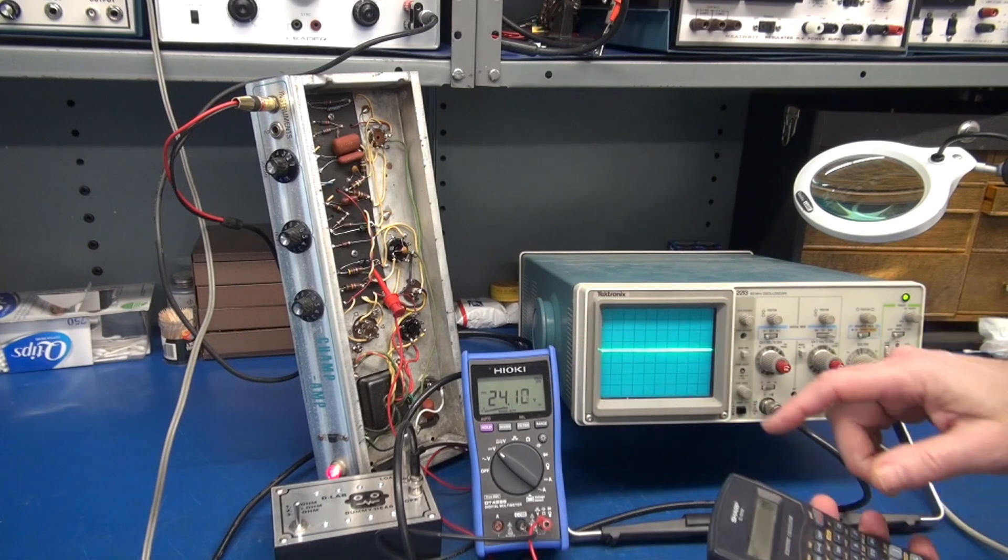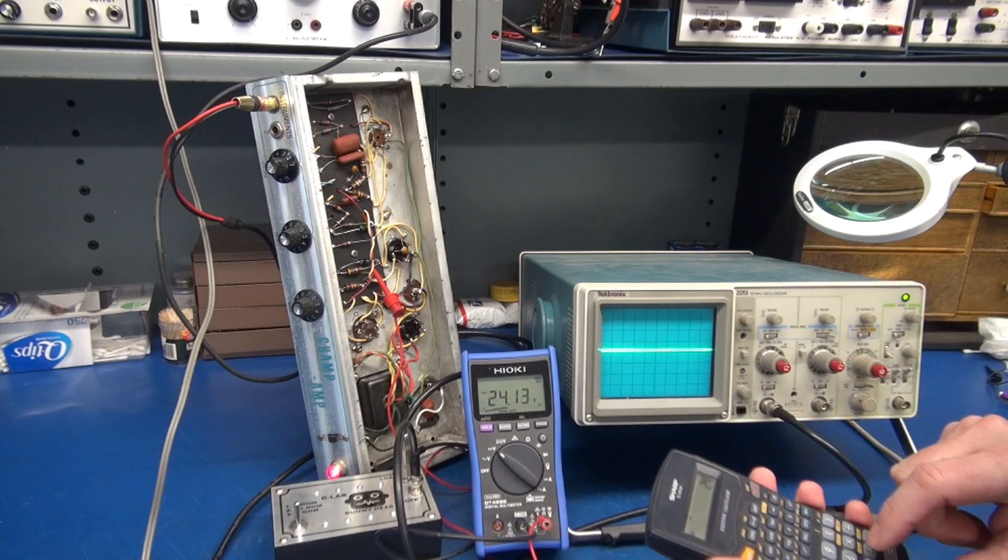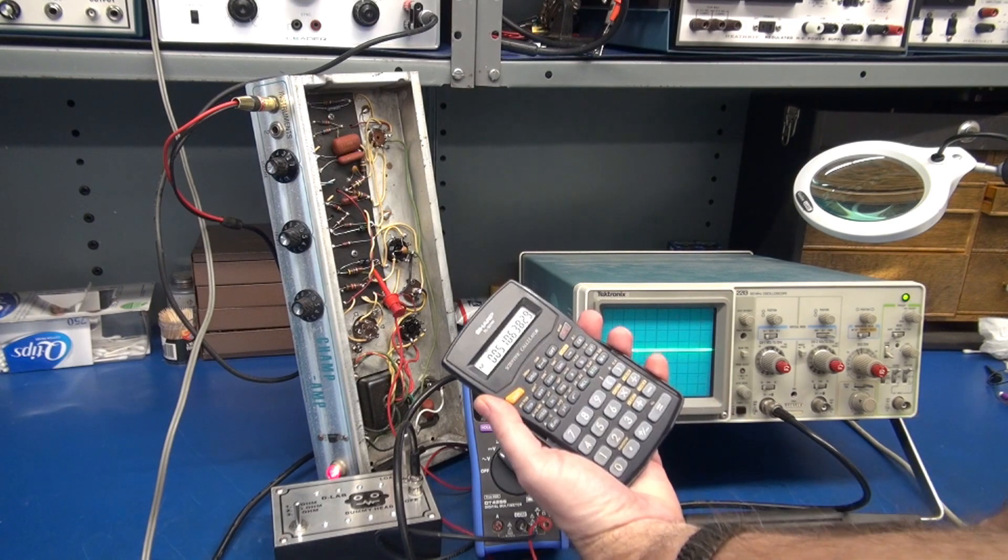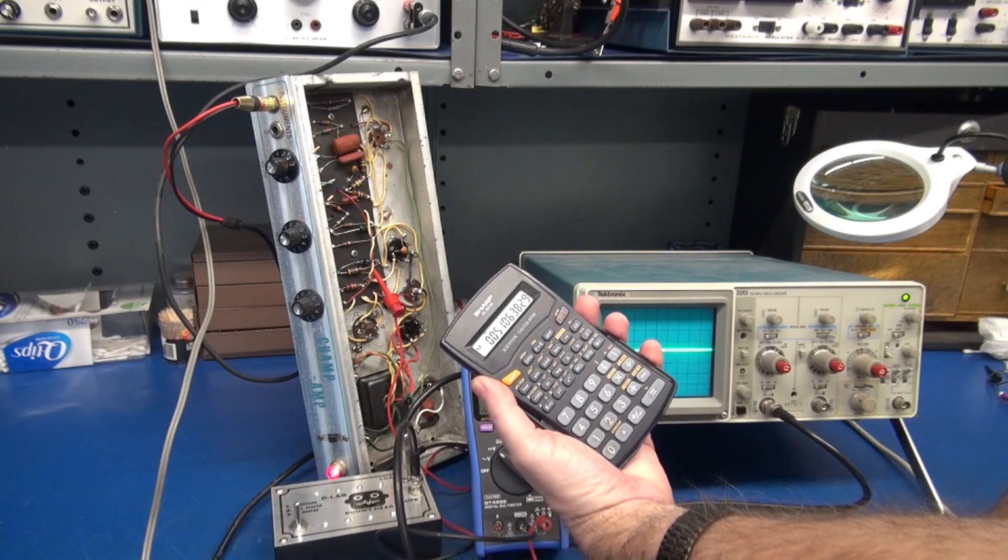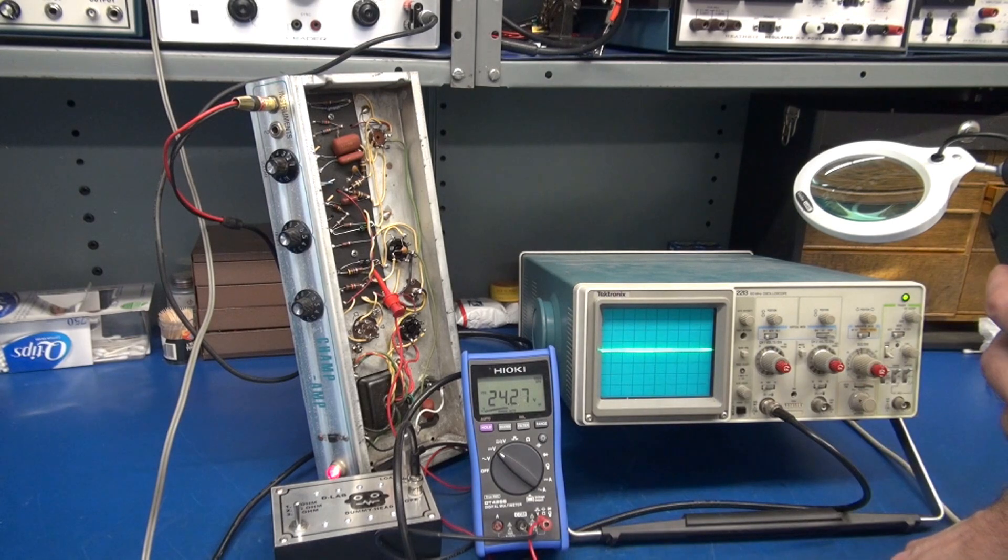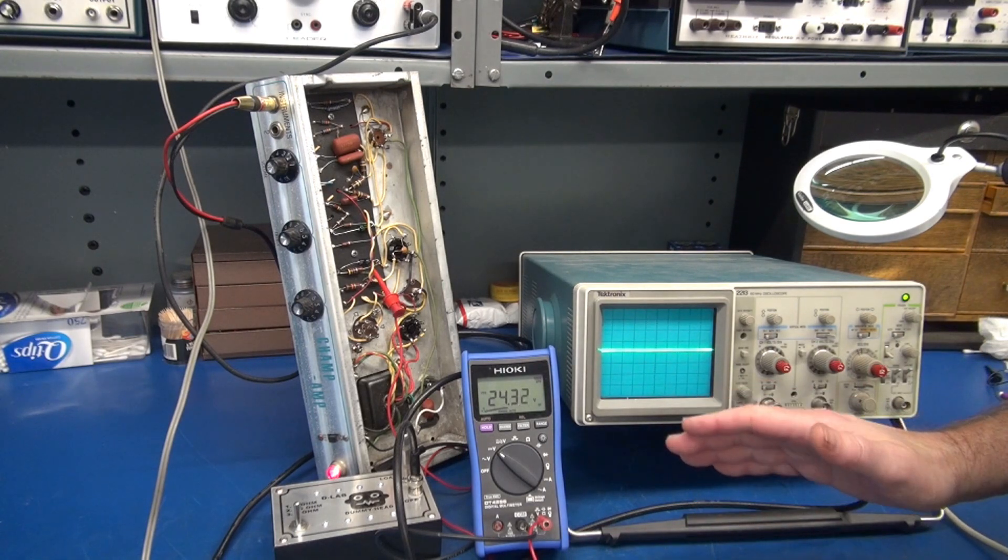So let's see what that bias is first off. We've got 24 volts divided by 470 ohms. We're idling at about 51 milliamps, which is way too high for that 6V6. So I'm assuming the poor guy is baked.